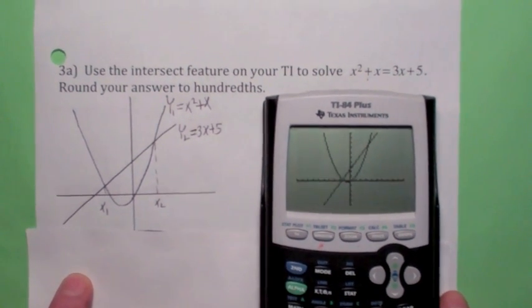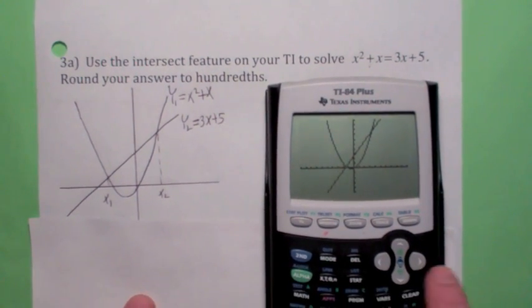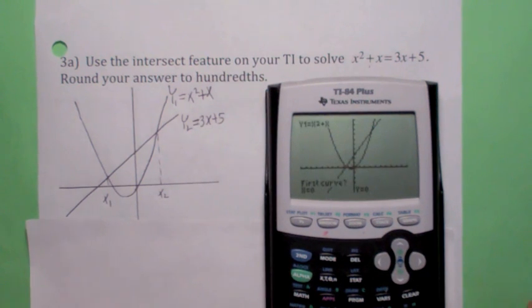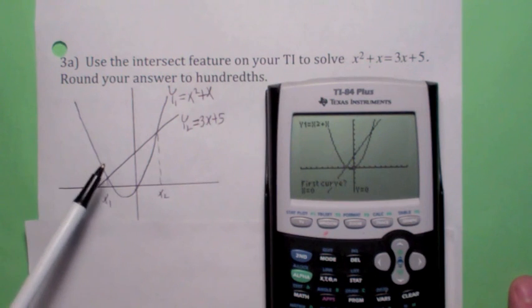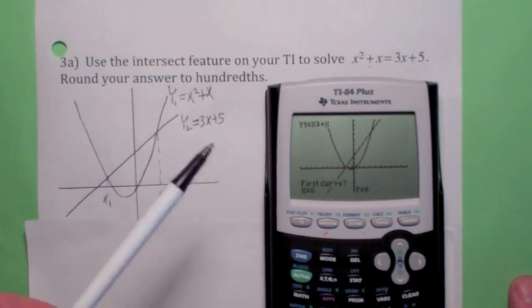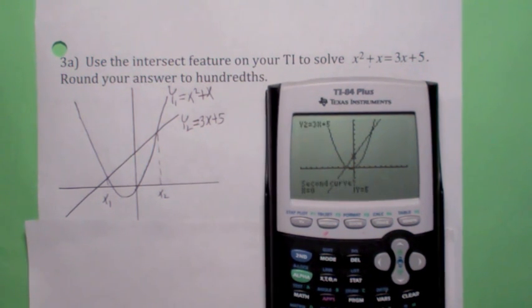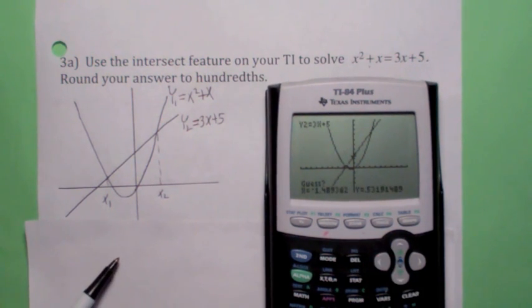Okay, so here we go. So, the intersect feature is very similar to the zero feature. It starts off the same way. You go second, calc. Now, instead of selecting zero, let's select enter, intersect. Now, the way it works here is you have to tell it which two functions you want to look at. Since we only have two entered, it doesn't really seem like we have to do this. But if you had like five functions in there, you have to tell it which two. The first curve is x squared plus x. Yes. So, hit enter once. The second curve is 3x plus 5. Yes. Hit enter a second time. Now, the third thing we do is we get close to the point of intersection. So, let's use our left arrow key, get close to that point of intersection, hit enter a third time, and I get about negative 1.45.